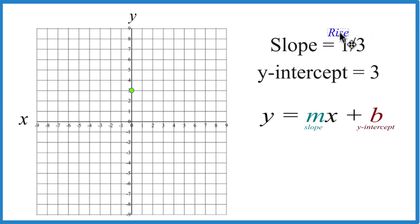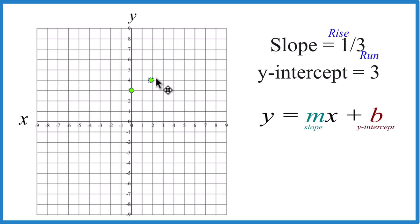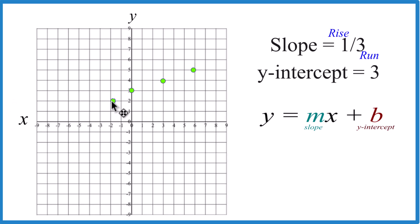For the slope, think about that as rise over run. We're going to go to our y-intercept, rise one, and run one, two, three to the right. We could even go in the opposite direction — go down one and go one, two, three to the left.